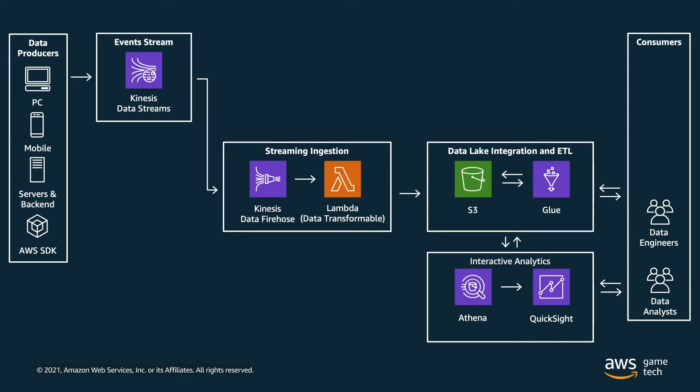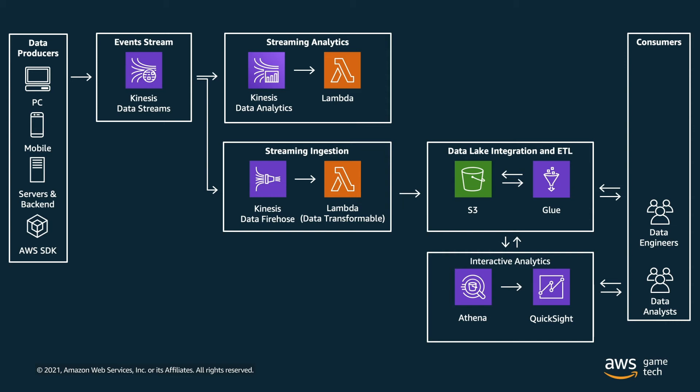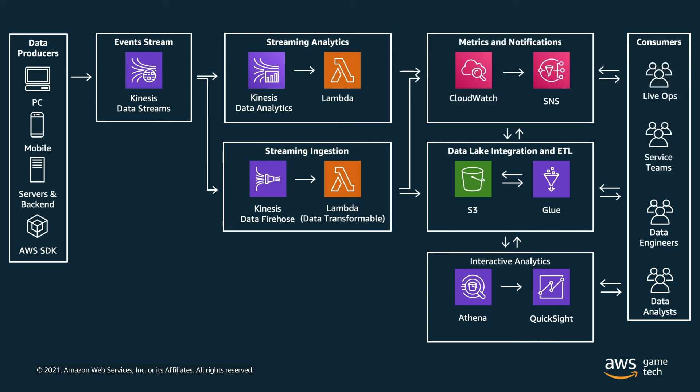Now let's talk about streaming analytics. That entire first portion was batch analytics. For streaming analytics, we return to Kinesis Data Streams, which can send data to two different places in parallel — to Kinesis Data Firehose, and also to Kinesis Data Analytics for real-time data streaming. This service provides an easy way to generate live KPIs with real-time data, producing metrics such as logins per minute, registrations per minute, and purchases by country per minute. These metrics are post-processed with a Lambda function and published to a CloudWatch dashboard, which is our monitoring service.